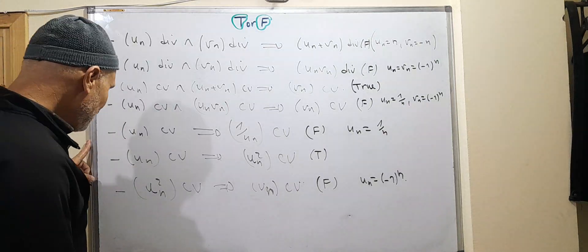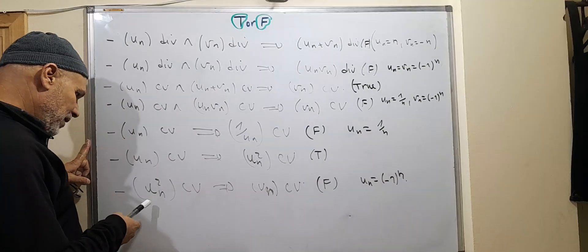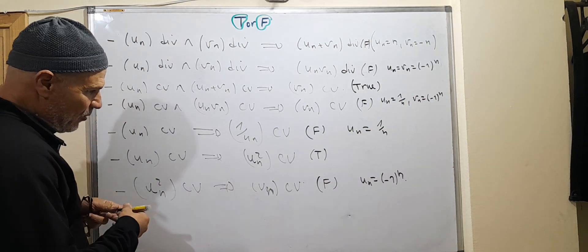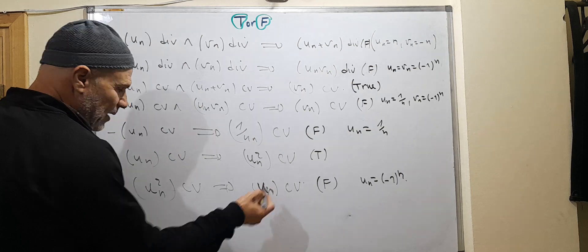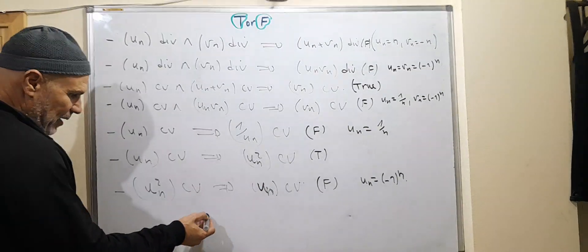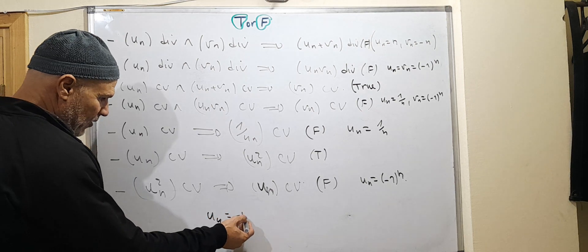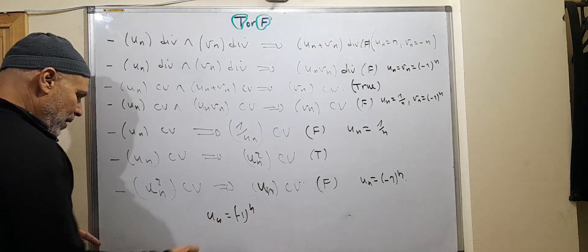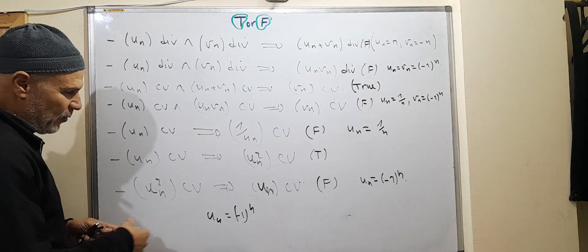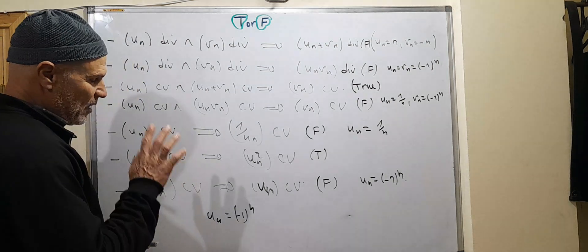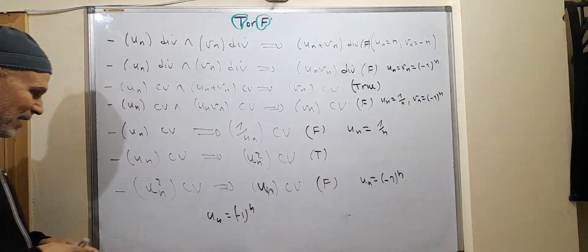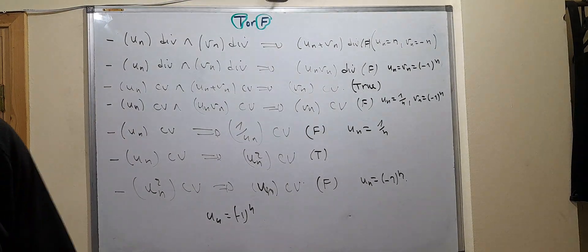If uN squared is convergent, how about uN? uN is not necessarily convergent. For example, take uN equal to (-1)^N. The square is (-1)^(2N), which is convergent, but uN is not convergent. This ends this short video — thank you very much, see you in the next video.